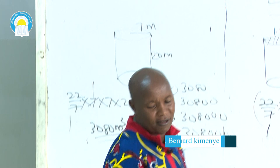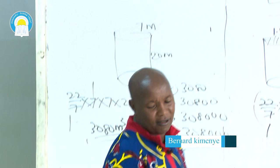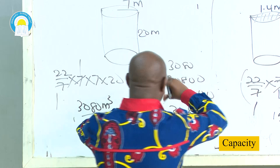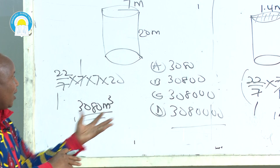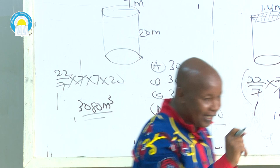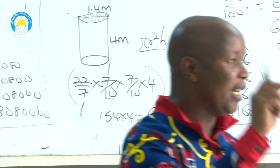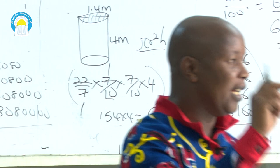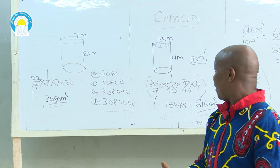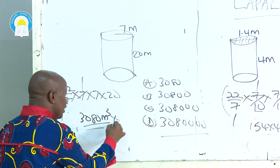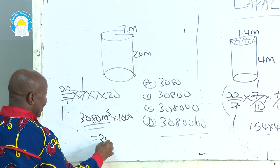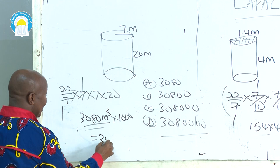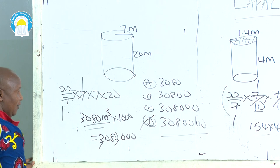The examiner is not interested in the volume — what is the capacity in liters? If you haven't read the question, you'll tick choice A (3,080). But I said to convert cubic meters to liters, simply multiply by 1,000. So 3,080 × 1,000 — you add three zeros — equals 3,080,000 liters. That is choice D, which is the capacity of that cylinder in liters.